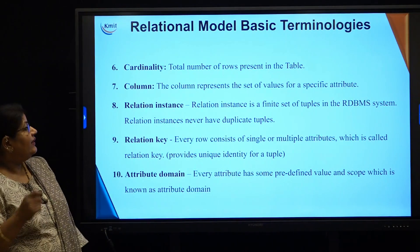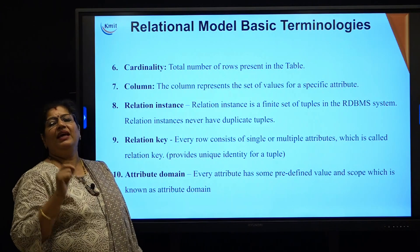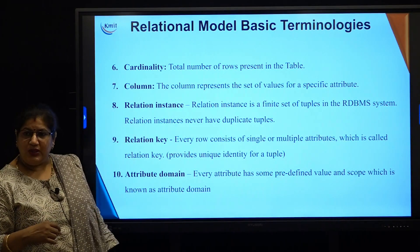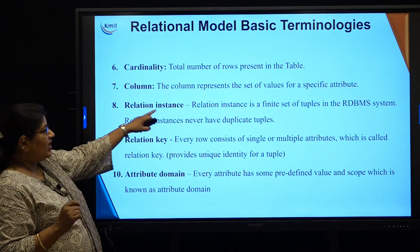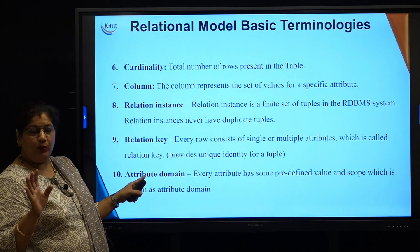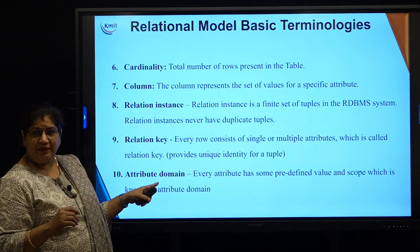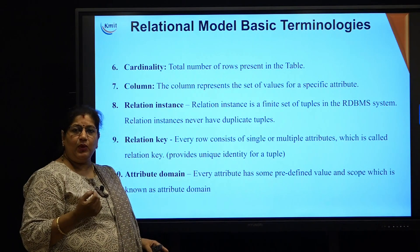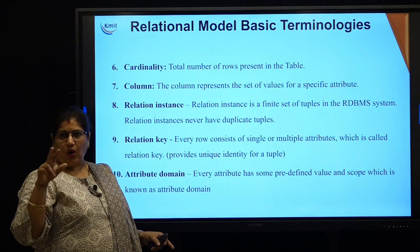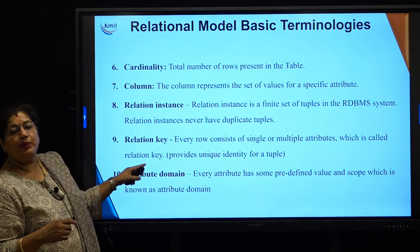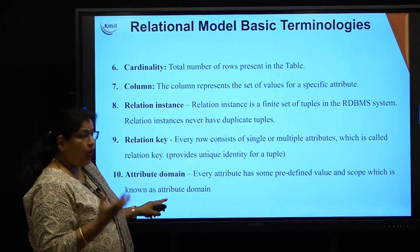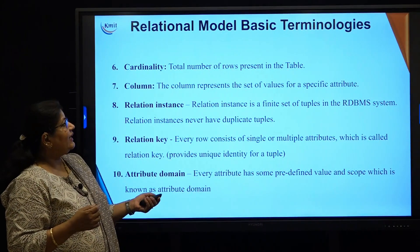Cardinality refers to the number of rows present in the table, that is the total number of instances. A column represents the set of values for a specific attribute. The relational instance, as discussed earlier, is the finite set of tuples of that particular table and will not have duplicate values. Relation keys are those column attributes which can be used to uniquely identify a record — they can be a single column or a combination of multiple columns. Every attribute has a predefined set of values, and this scope of values is known as the attribute domain.